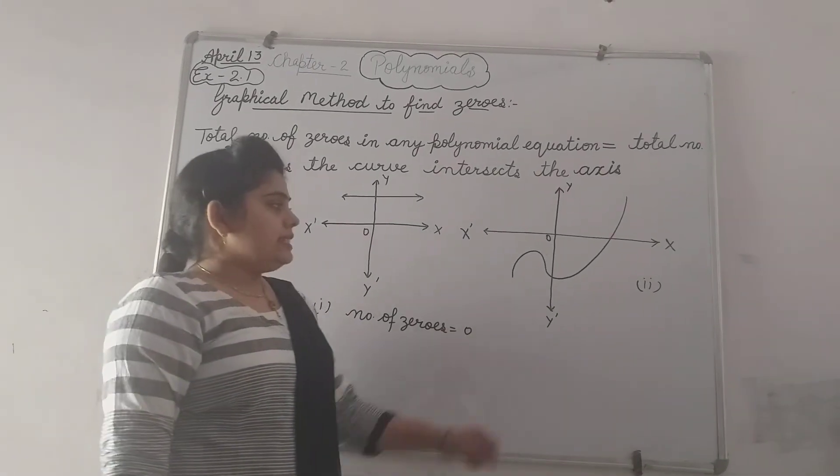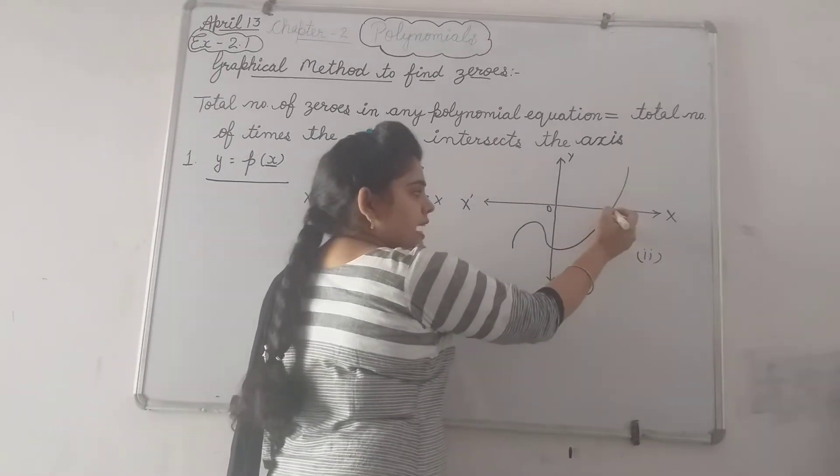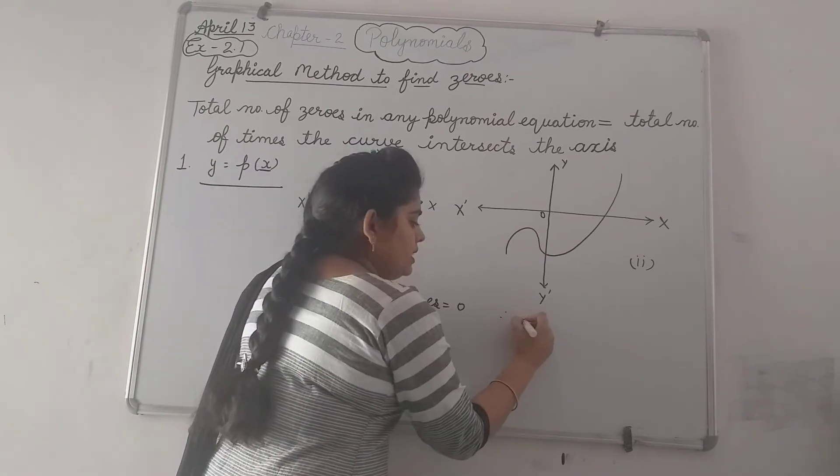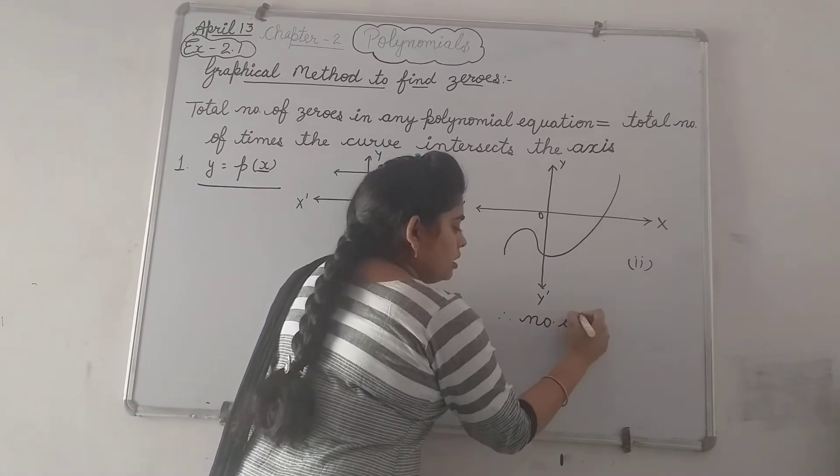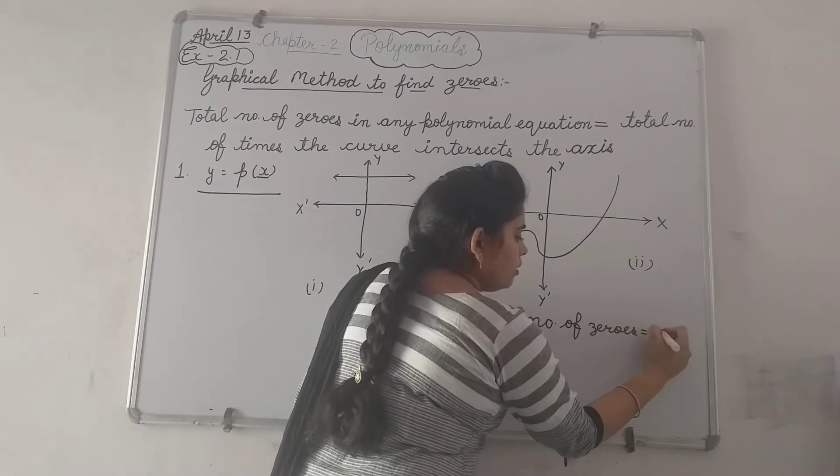And in second example, one curve is given and this curve is intersecting this x axis one time. So in this case, number of zeros are 1.